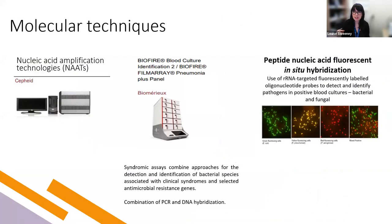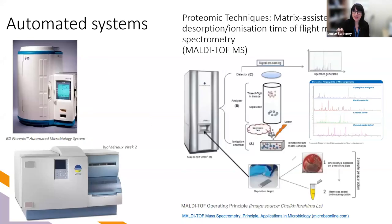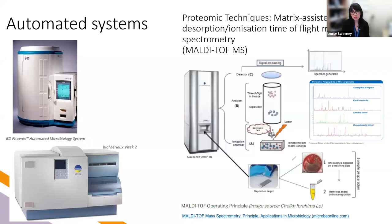You get peaks according to the presence of particular proteins, and that gives you an identification from a vast, regularly updated database. These methods do cost money and resource, so they're not available to everybody. MALDI-TOF is certainly much faster — you can get a result within a few hours, same day, from a colony, and with the right kits, also directly from positive blood cultures.